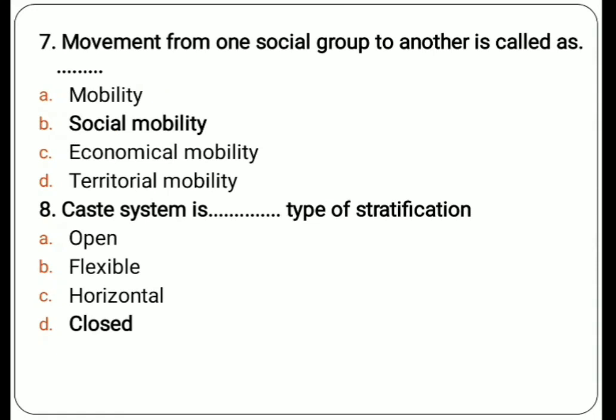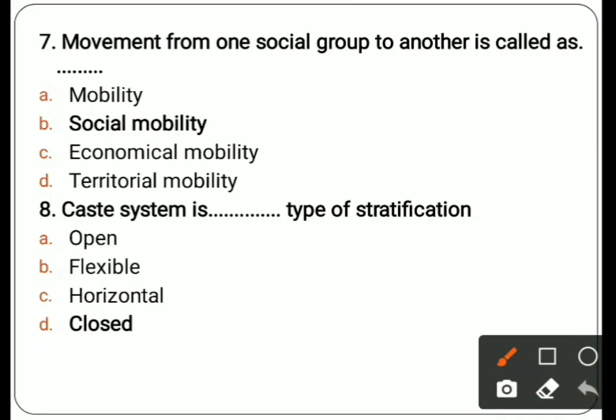Seventh question: movement from one social group to another is called dash dash. Options are mobility, social mobility, economical mobility, territorial mobility. The correct answer is social mobility.